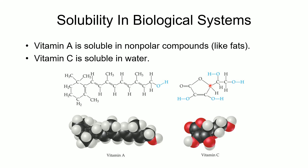On the other hand, we have vitamin C. You can see all these OHs and oxygens — it has hydrogen bonding capability all over the place. Vitamin C is quite soluble in water. If you get too much vitamin C in your body, no problem — your body can eliminate it through urine. That also means you need a constant supply of vitamin C. If you don't get it, you'll get scurvy. You have to have a constant supply in your diet — you can't go months without it. Fortunately, in our modern world we usually have access to these vitamins in great abundance.